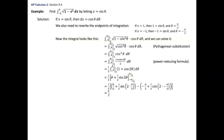Remember: sine of two times pi over two is sine of pi, which is zero. Same thing for negative pi over two — sine of negative pi is zero. So those terms zero out. Pi over two minus negative pi over two equals pi, then multiplying by one half gives pi over two. That's how that works.